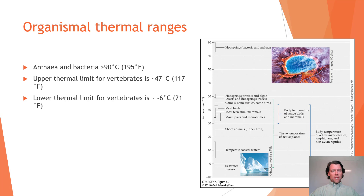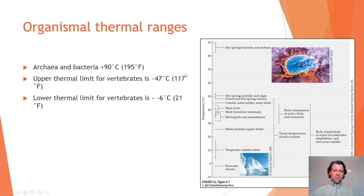Let's take a quick look at the thermal ranges of organisms. At the very warmest end, the organisms that can survive are archaea and bacteria found in hot springs and thermal vents, ranging just above 90°C (195°F) — just shy of boiling. The upper thermal limit of vertebrates tends to be about 47°C, whereas their lower thermal limit is about -6°C.